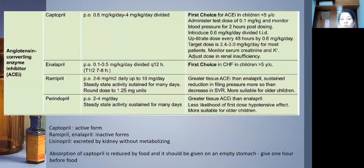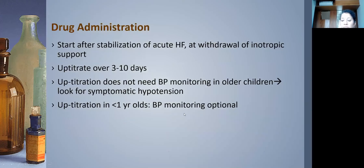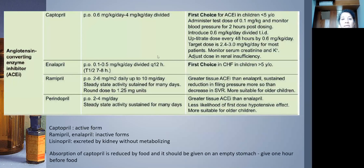For dosing: captopril is the first choice below five years, especially below one year. Start at 0.1 mg/kg and increase by 0.1 increments up to 0.6 mg/kg/day, given three times a day. Always give a test dose and monitor blood pressure every 30 minutes for the first two hours. Enalapril is the first choice in children over five years, given twice daily, starting at 0.1 and increasing to 0.5 mg/kg/day.